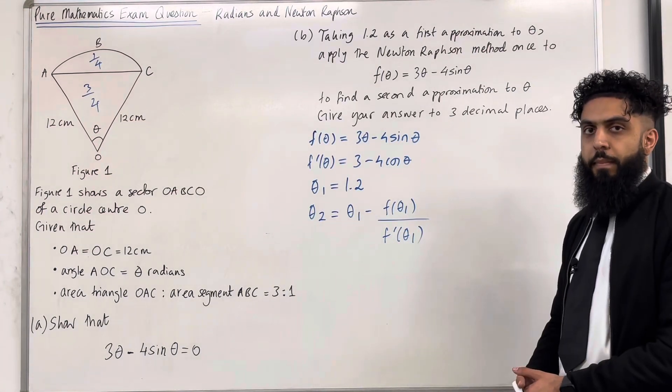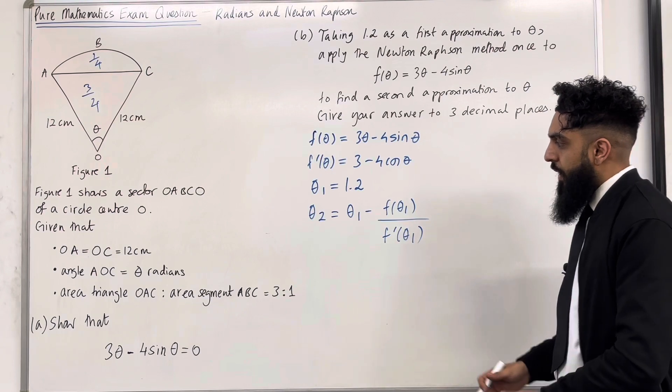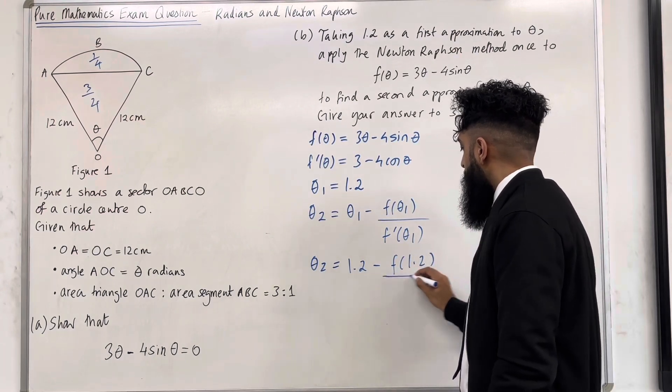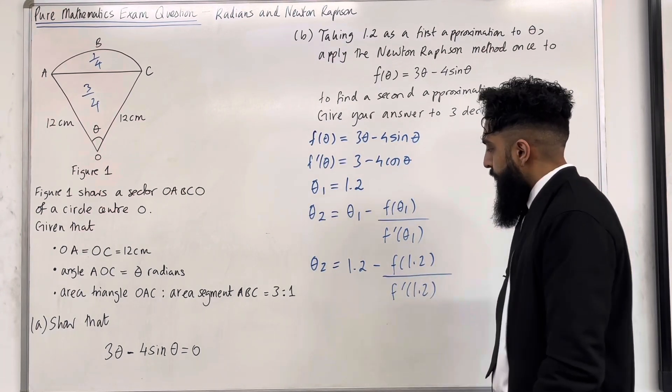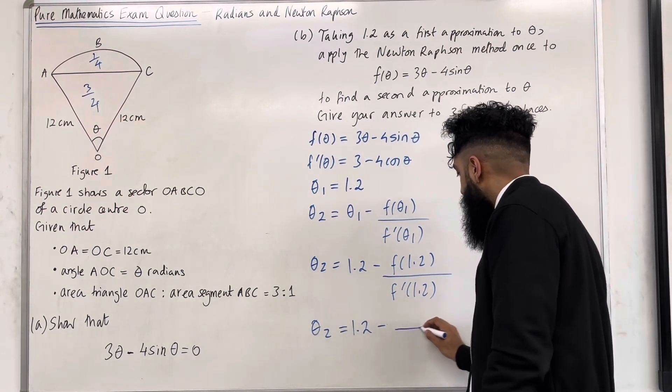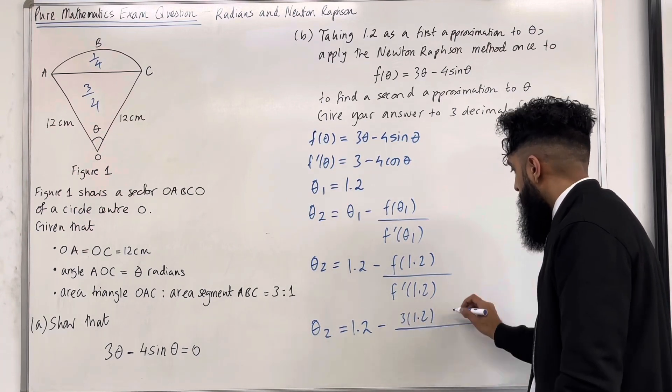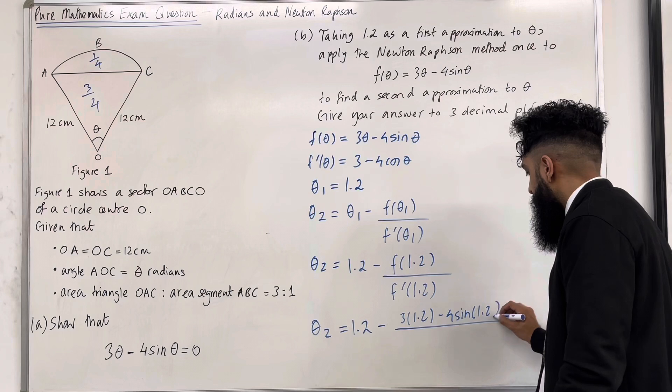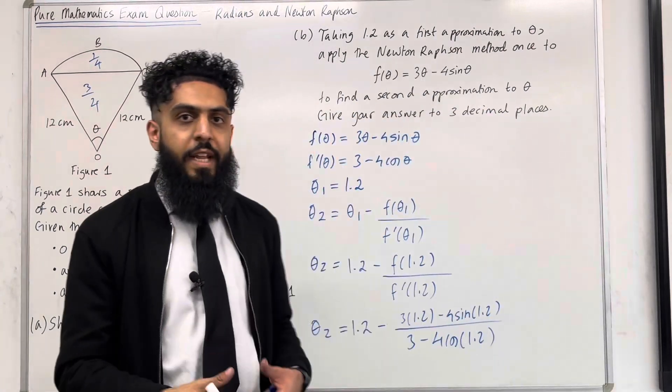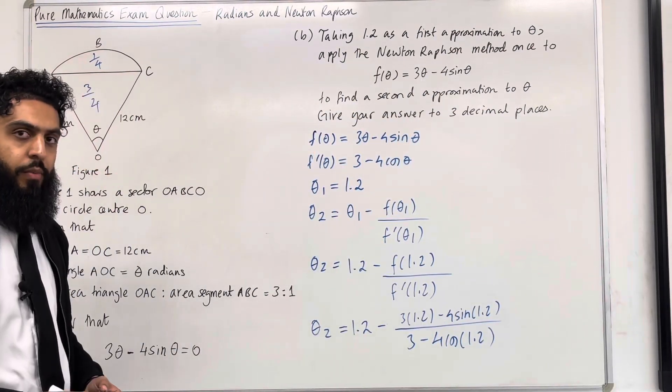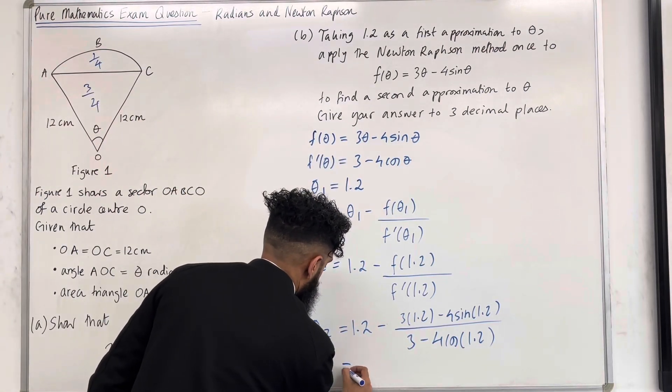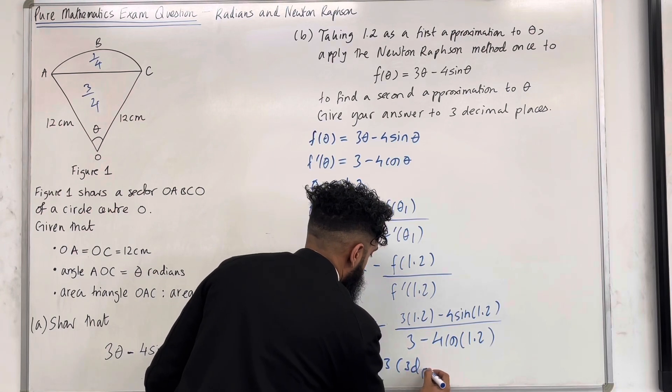This formula is given in the formula booklet. Now I can substitute my theta 1 in. I've got theta 2 equals theta 1, which is 1.2, minus f of 1.2 divided by f dash of 1.2. We've got theta 2 equals 1.2 minus 3 lots of 1.2 minus 4 sine 1.2 divided by 3 minus 4 cos 1.2. My calculator must be on radian mode. If I keep my calculator on radian mode and substitute all of this into my calculator, I get theta 2 equals 1.283 to 3 decimal places.